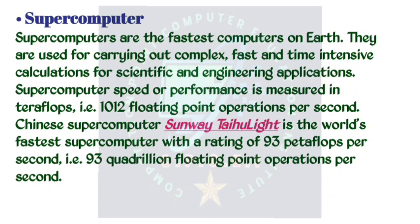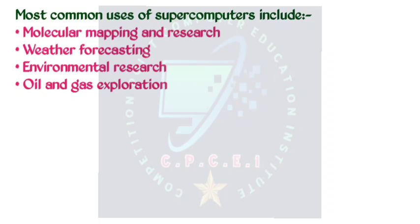Supercomputers are the fastest computers on earth. They are used for carrying out complex, fast, and time-intensive calculations for scientific and engineering applications. Supercomputer speed or performance is measured in teraflops (10¹² floating-point operations per second). The Chinese supercomputer Sunway TaihuLight is the world's fastest supercomputer with a rating of 93 petaflops per second (93 quadrillion floating-point operations per second). Most common uses of supercomputers include molecular mapping and research, weather forecasting, environmental research, and oil and gas exploration.